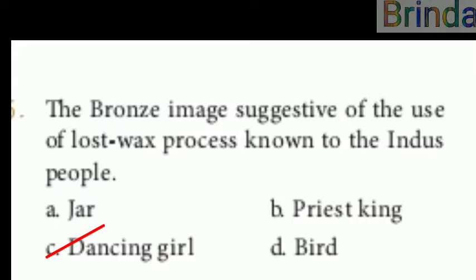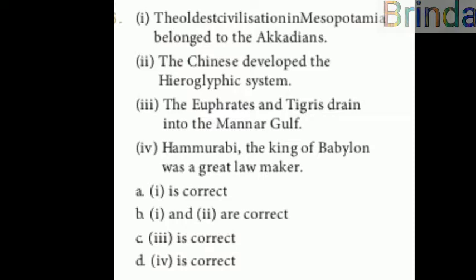Sixth one: which statement is correct? One — the old civilization in Mesopotamia belonged to the Akkadians. Two — the Chinese developed the hieroglyphic system. Three — the Euphrates and Tigris drain into the Manar Gulf. Four — Hammurabi, the king of Babylon, was the great lawmaker. The answer is D — the fourth statement is correct.